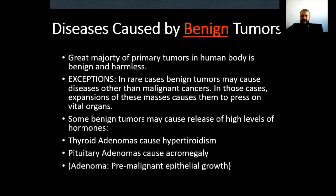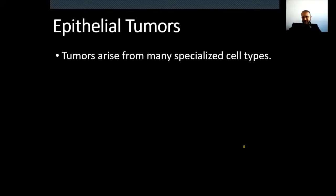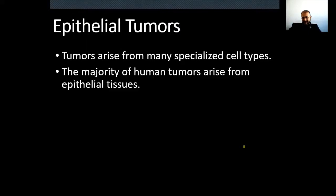Adenoma means pre-malignant epithelial growth — tumors that arise from epithelial cells but which are not malignant are called adenomas. Most of the tumors are epithelial tumors, meaning they arise from epithelial cells. Tumors arise from many specialized cell types, but the majority of human tumors arise from epithelial tissues. The majority of human tumors arise from epithelial tissues.